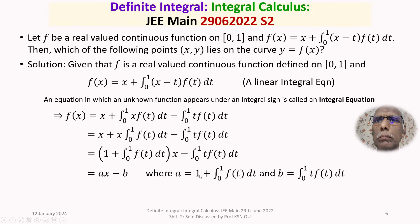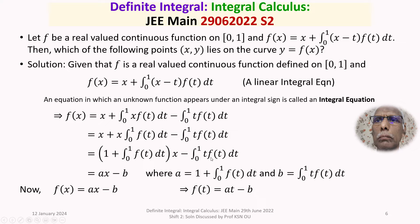We define constants: a = 1 + ∫₀¹ f(t) dt and b = ∫₀¹ t·f(t) dt. So f(x) = ax − b, which is a linear equation. This also means f(t) = at − b, since f(t) appears under the integral sign and follows the same linear form.